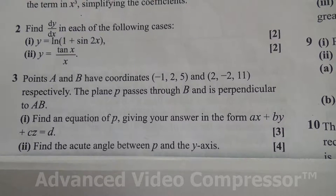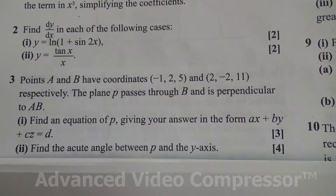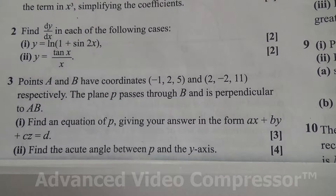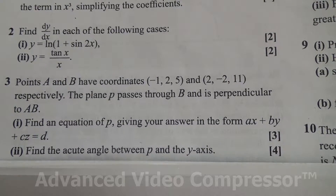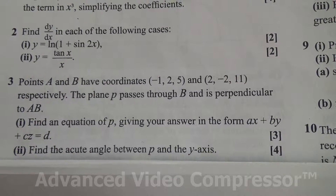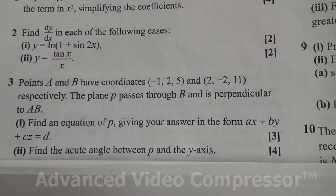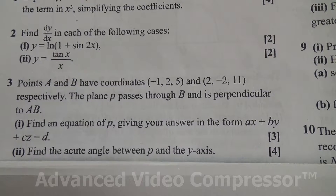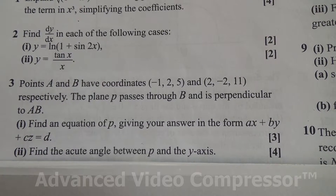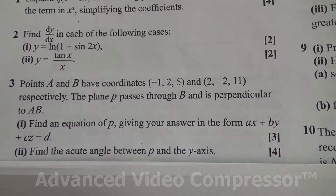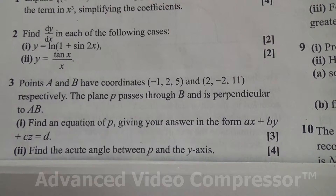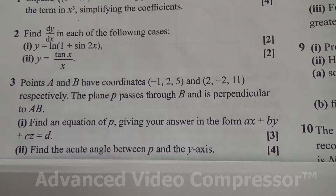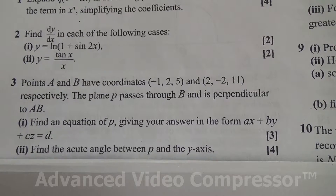Hi, question number 3. Points A and B have coordinates minus 1, 2, 5 and 2, minus 2, 11 respectively. The plane P passes through B and is perpendicular to AB. Find an equation of P, giving your answer in the form AX plus BY plus CZ equals D. Second part: find the acute angle between P and the Y-axis.